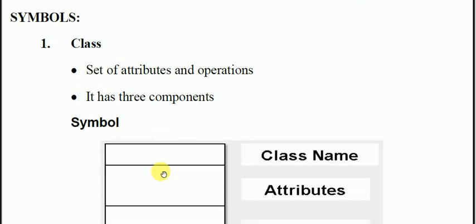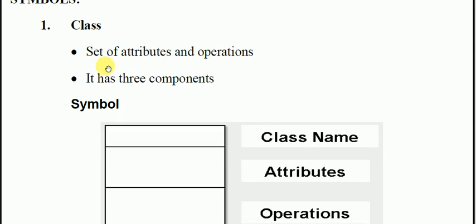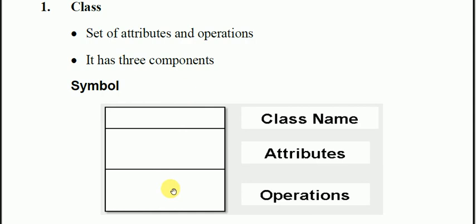You can see the symbol here. The symbol is the class. Here you have a partition in three parts. We divide a rectangle. What is the set of attributes and operations? Attributes are like properties, and operations are the methods which we are going to perform in that particular class. Your class has a set of attributes and operations with three components: class name, attributes in the second block, and operations or methods in the third block. In this way we represent the class diagram.